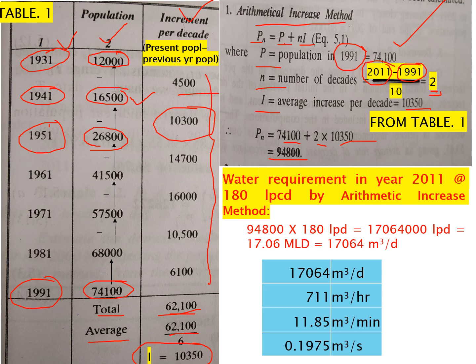Now we have to find the water requirement in year 2011. The water demand is assumed to be 180 liters per capita per day. Simply, we take the predicted population and multiply it by the water demand per capita per day.